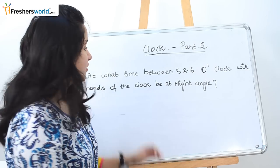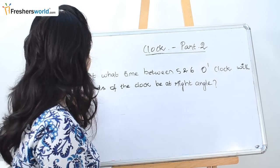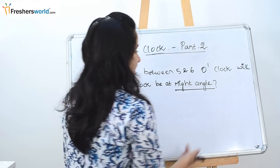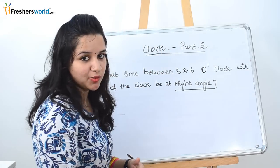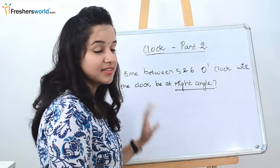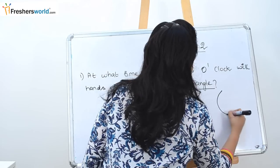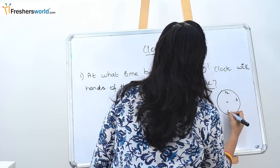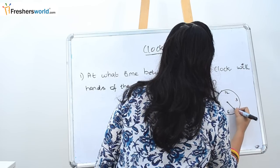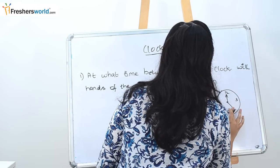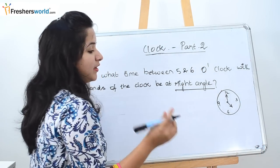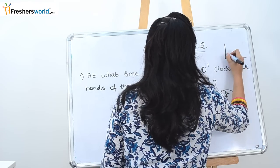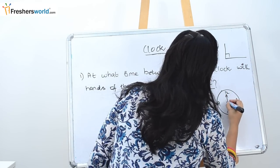The next question is: at what time between 5 and 6 o'clock will the hands of the clock be at a right angle? Other ways this question may be phrased include: when are the hands perpendicular, or when are they at 90 degrees. Between 5 o'clock and 6 o'clock, when will the hands be at right angles? A right angle means 90 degrees.